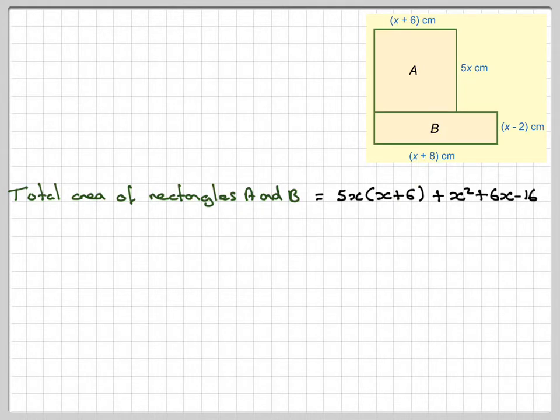Writing that out again. Okay, so we'll just expand this bracket here. 5x times x is 5x², 5x times 6 is 30x, and then we've got + x² + 6x - 16.